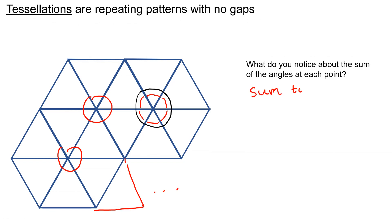And this is actually the condition for a shape to tessellate. It will tessellate only if at the point of intersection the shapes have angles that add up to 360 degrees.